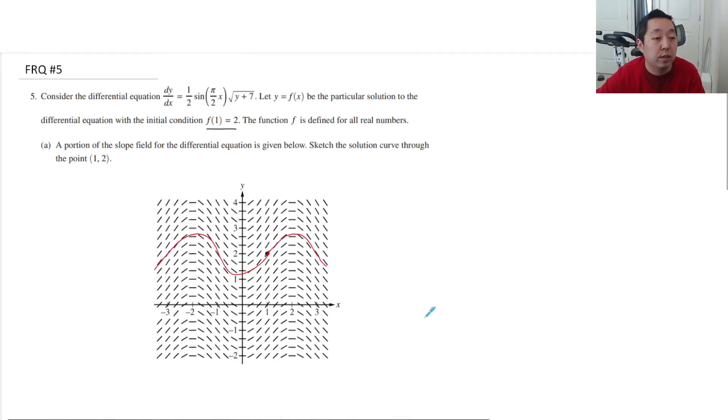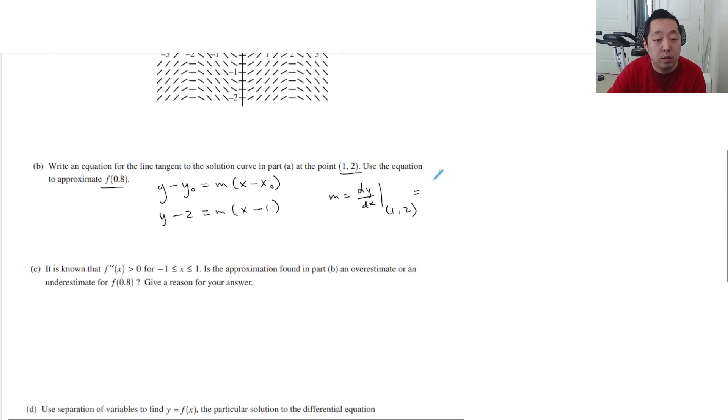And so the m is the dy dx at that point. So let's find that derivative. We would have to look at this equation here. So at that point, at point 1, 2, it would be 1 half sine pi over 2 times 1, and then the y value is 2 square root of 2 plus 7. And so sine of pi over 2 is just 1 times square root of 9, which is 3. So that's 3 halves.